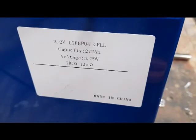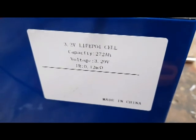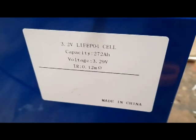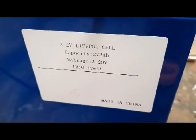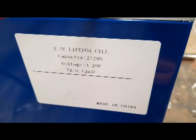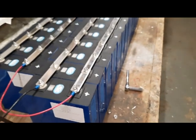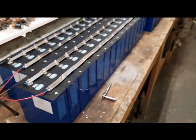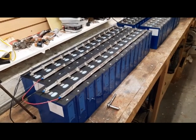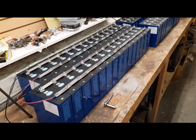So these are new grade A cells. And when they left the factory, they had 0.12 milliohm resistance, internal resistance, which is really small. But when you put 0.12 milliohms in parallel 29 times, it becomes a really, really, really tiny resistance.